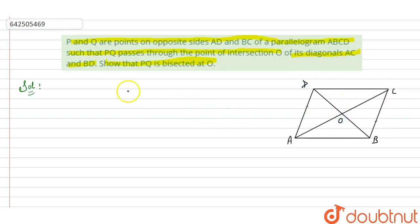So, OD is equals to OB according to the properties of parallelogram and P and Q are the points on AD and BC, this one P and this one Q. Now join these two points here.